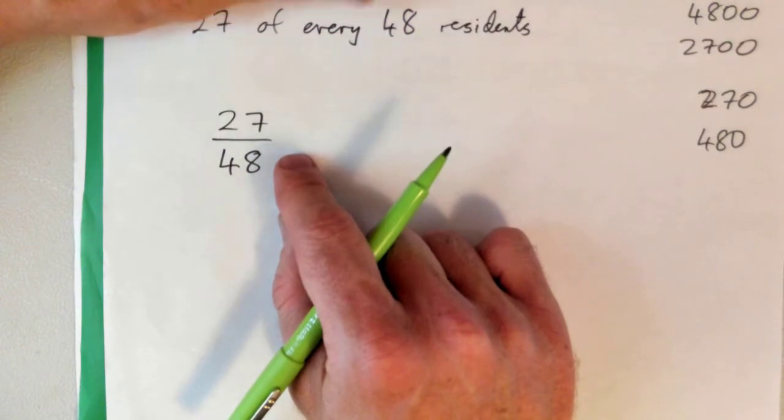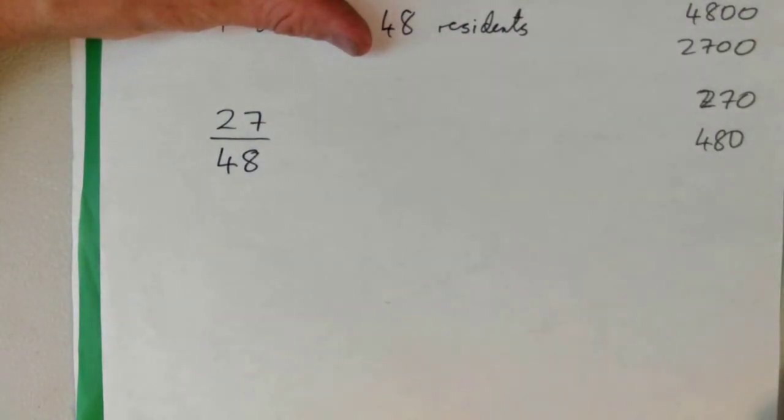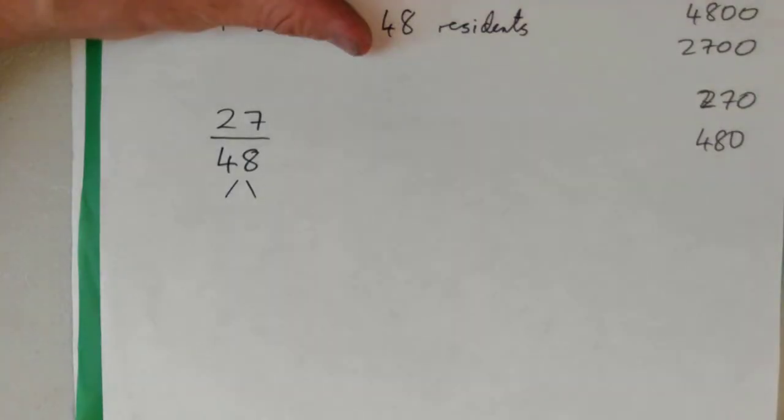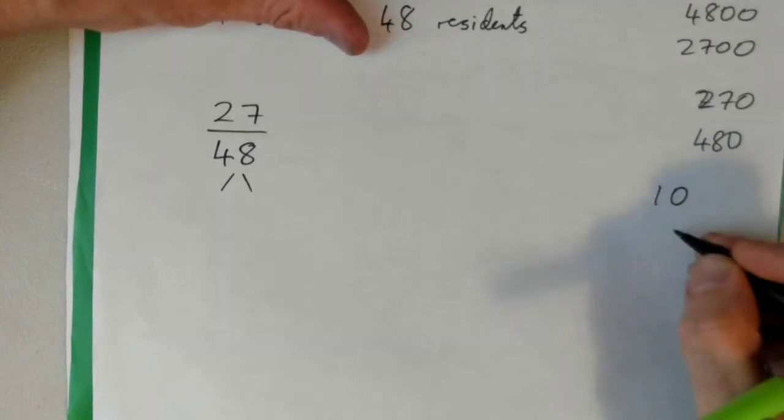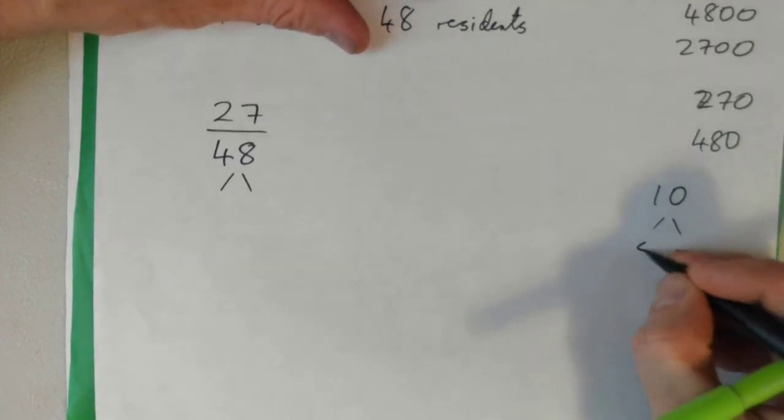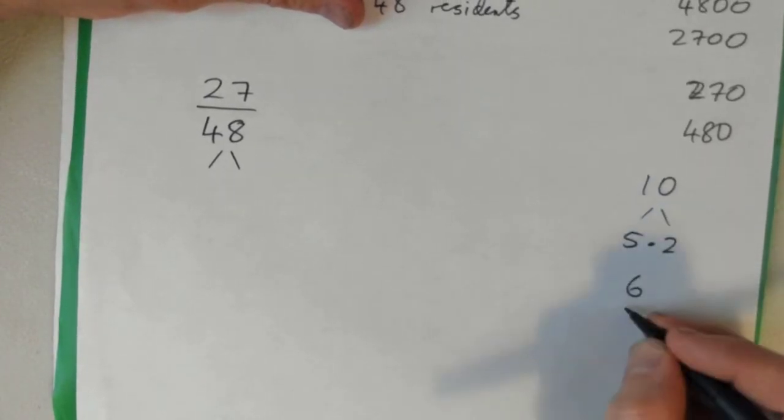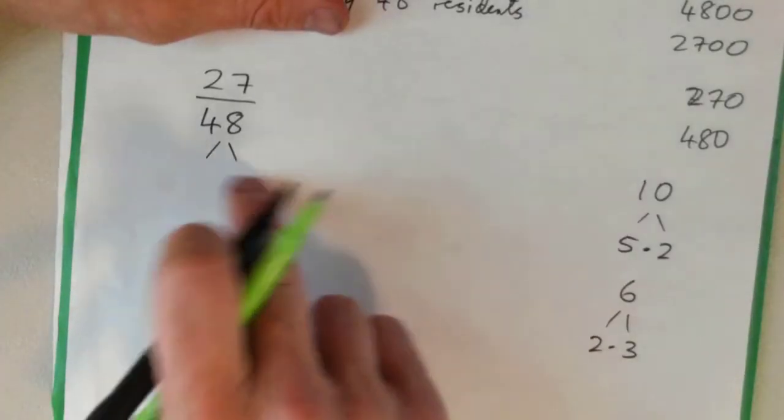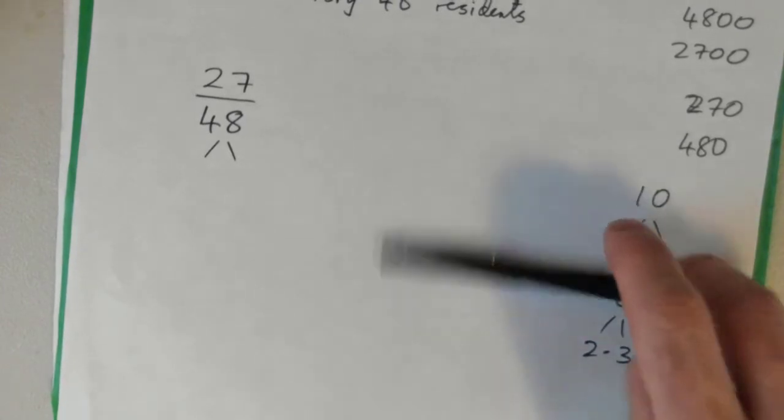So I think we're going to do that here. I want you all to split 48 into two factors. And what I mean by that is, if I said split 10 into two factors, I would say okay it's 5 times 2. Or if I said split the number 6 into two factors, that's 2 times 3. So just split 48 into two factors and see what you come up with.